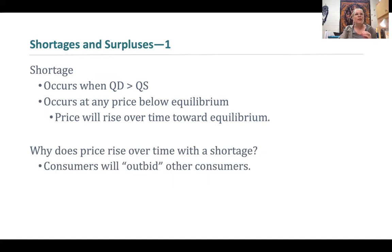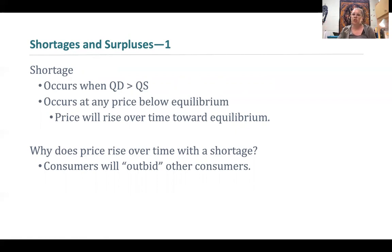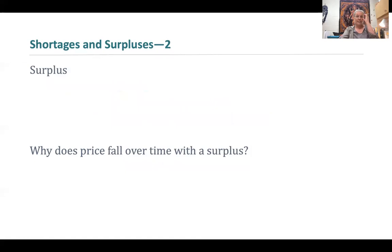Essentially, one consumer will outbid another. Think about a situation where there's a limited number of tickets to a very popular concert — people buy up the tickets and there are still people who want them. Ticket holders go on to third-party selling websites and sell their tickets at higher prices than what they originally paid, because the original ticket price was obviously too low and people were willing and able to pay more to access something they highly demanded.